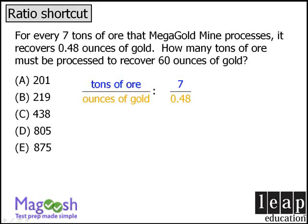We want to know how many tons of ore must be processed to produce 60 ounces of gold. So we'll set up our equivalent ratio as x tons of ore compared to 60 ounces of gold. Now to solve this equation, we'll first cross multiply.